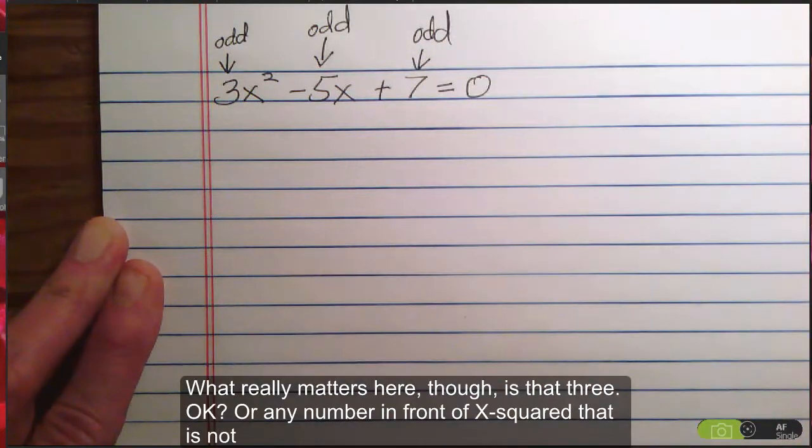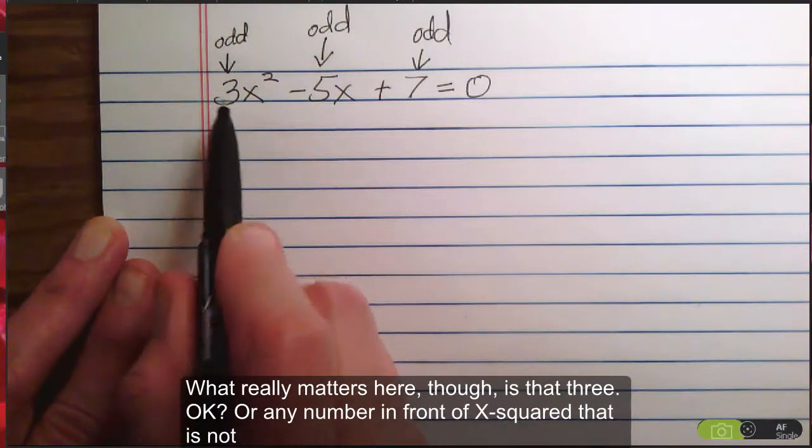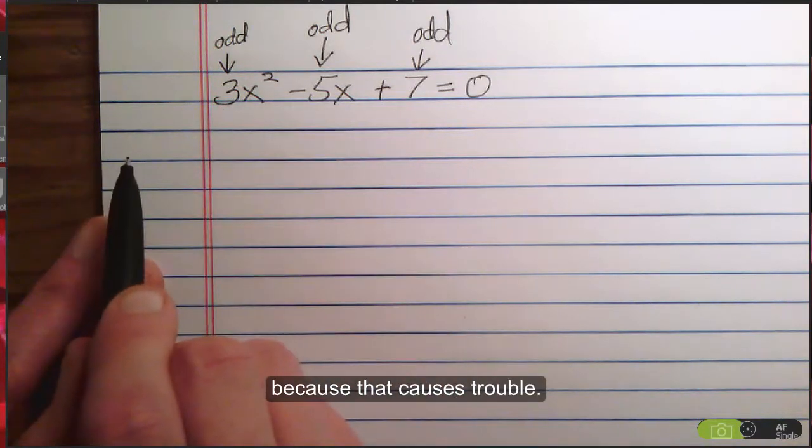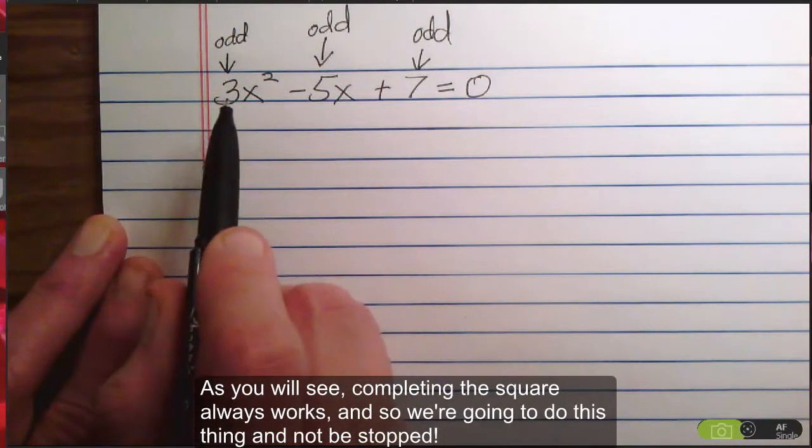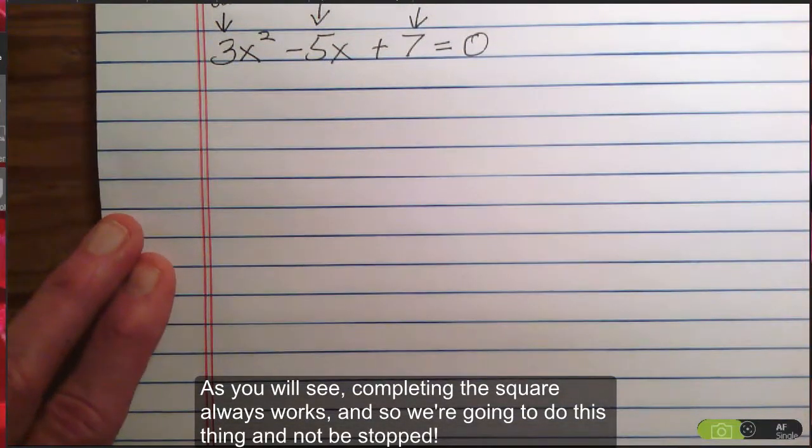What really matters here, though, is that 3, or any number in front of x² that is not 1, because that causes trouble. As you will see, but completing the square always works. And so, we're going to do this thing and not be stopped. There we go.